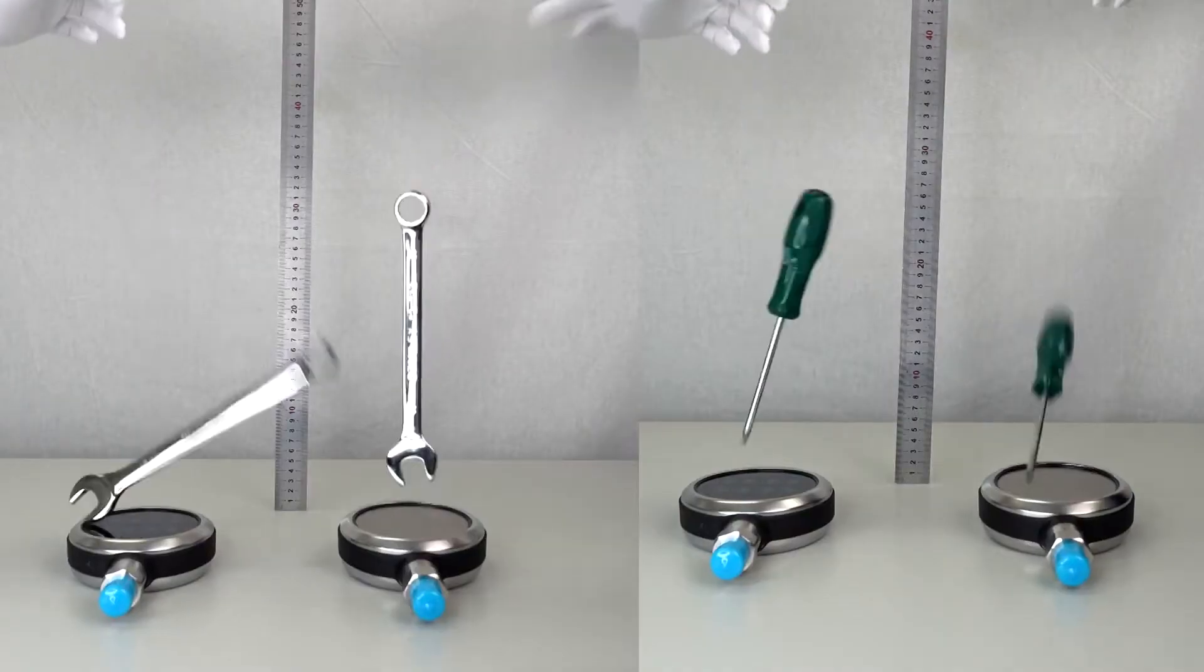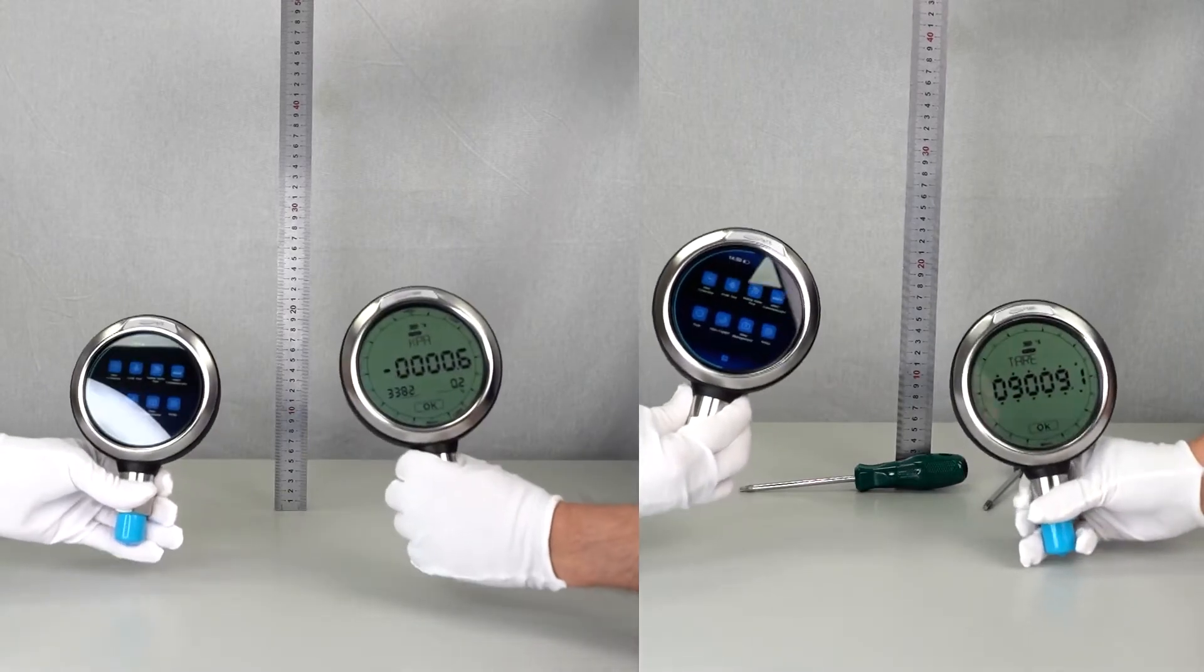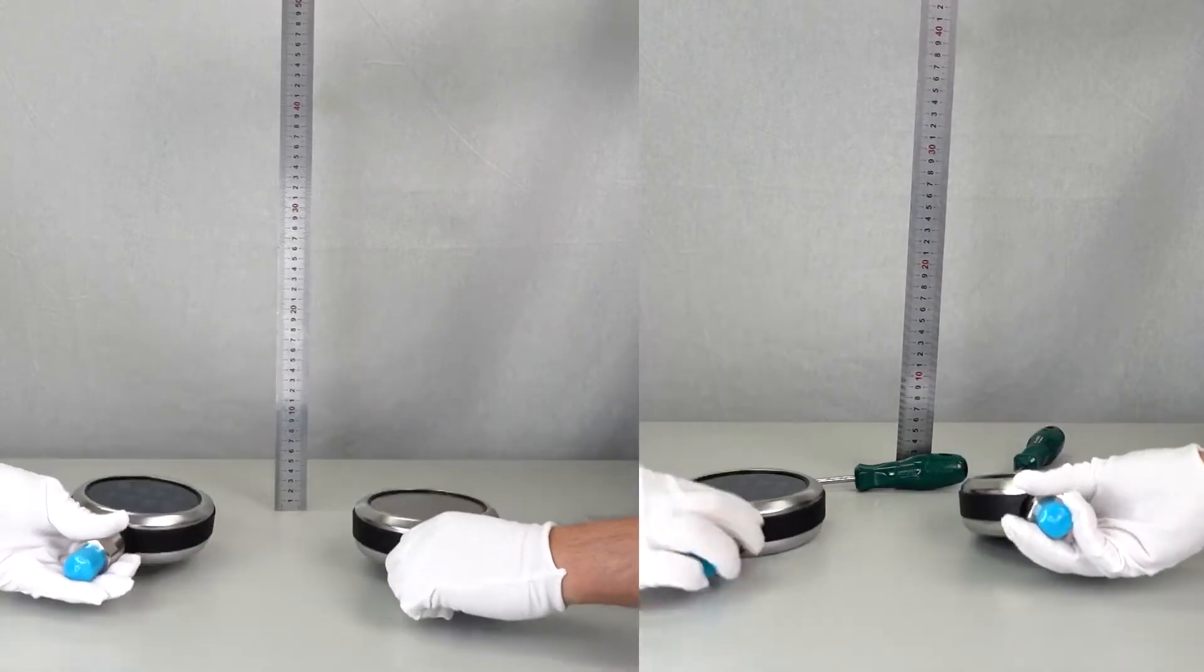We move on to dropping a sizeable wrench and screwdriver directly onto the screen from 20 centimeters to simulate potential hazards in industrial fieldwork. As you can see, the screens are not damaged.